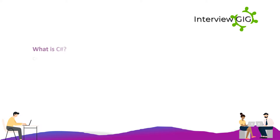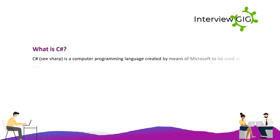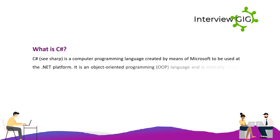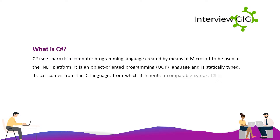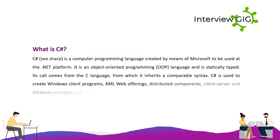What is C#? C# is a computer programming language created by Microsoft for use on the .NET platform. It is an object-oriented, statically typed language whose name comes from the C language, from which it inherits a comparable syntax. C# is used to create Windows client programs, XML web services, distributed components, client-server and database applications, and more.